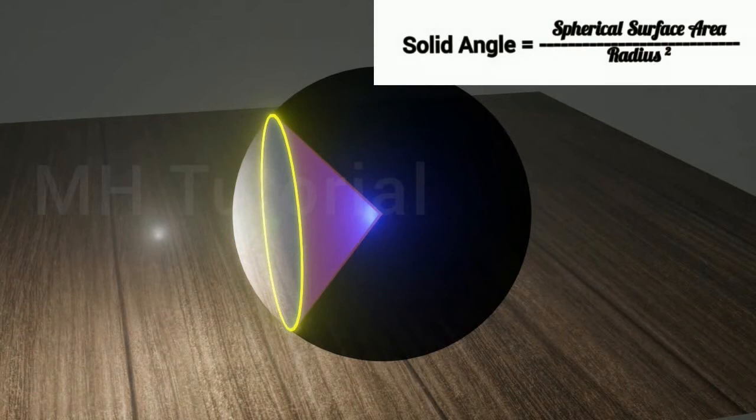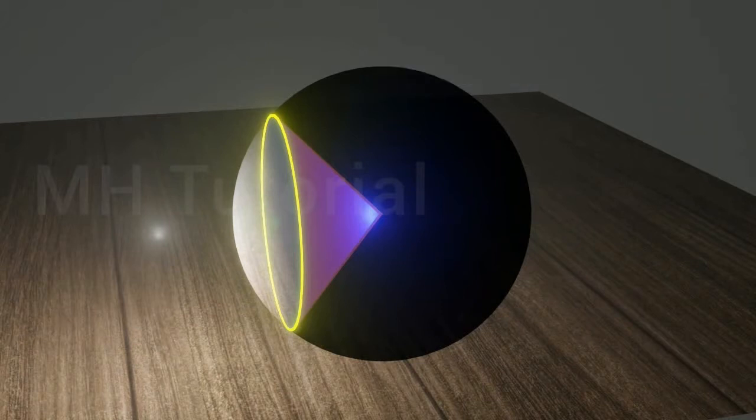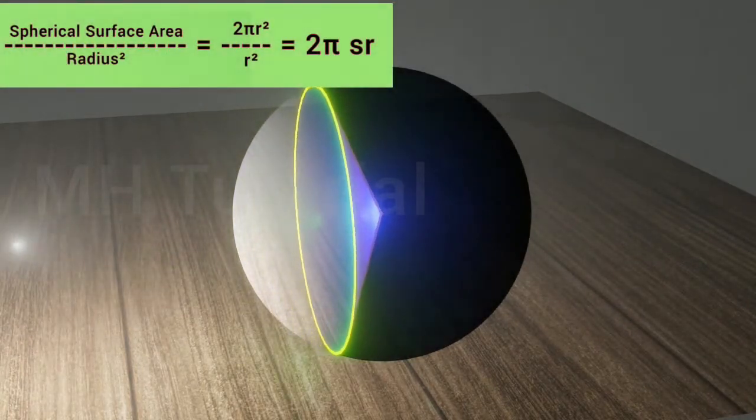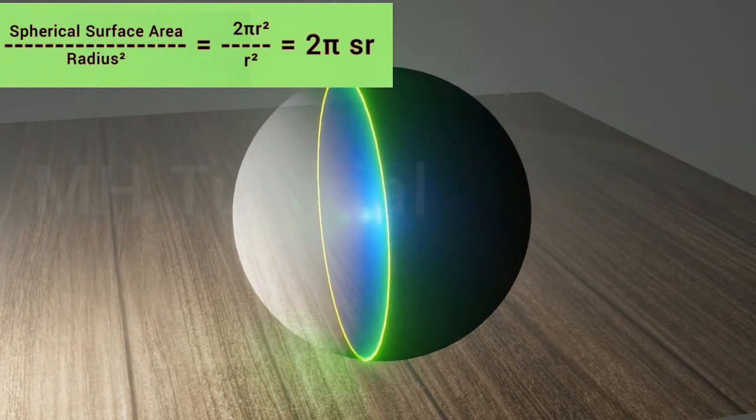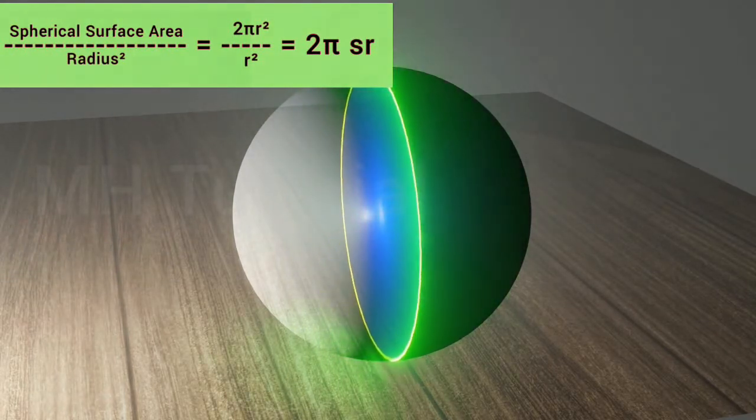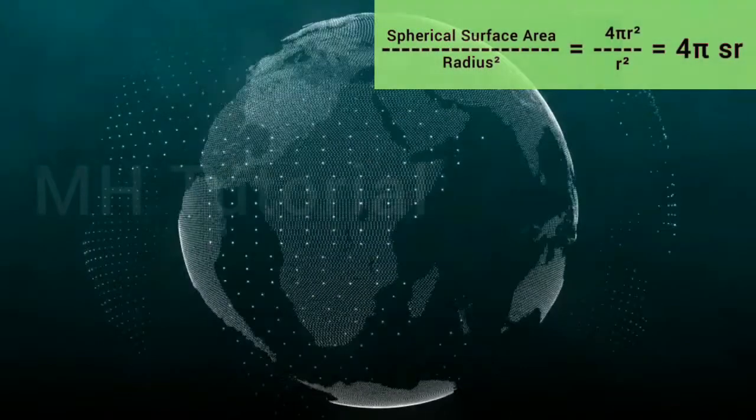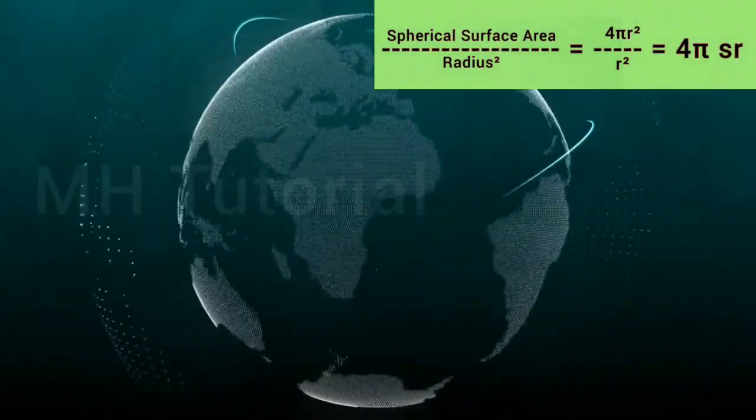Thus, we understand that ratio of surface area to the square of its radius is called a solid angle. For a hemisphere, the solid angle it creates at its center is of 2 pi steradian. For the whole sphere, the solid angle is 4 pi steradian.